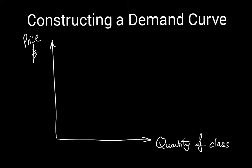Let's start the bidding very low — at 10p. This is just your basic plain black coffee. If I set the price at 10p, pretty much everybody in the class is going to be willing to pay that. The only ones that probably won't are those that don't really like coffee. So in my class of 20, it's quite likely that at least 15 would be willing to pay 10p. That's the first point I plot on my chart.